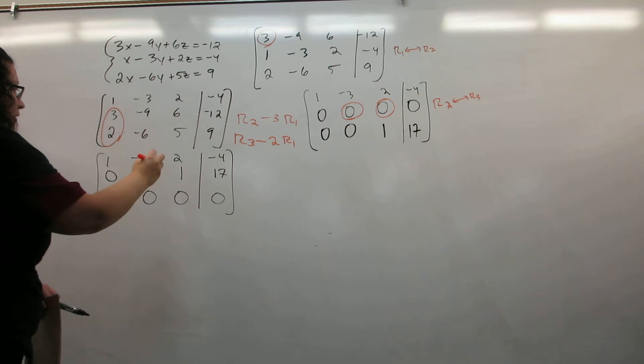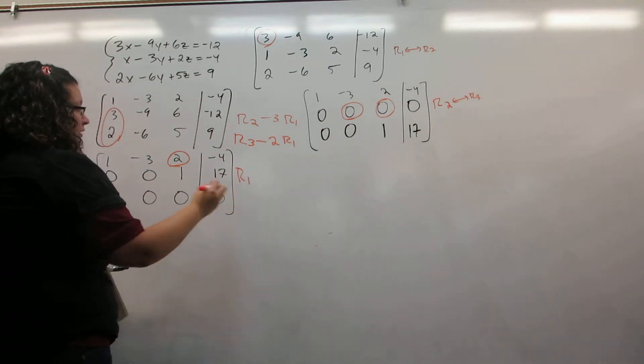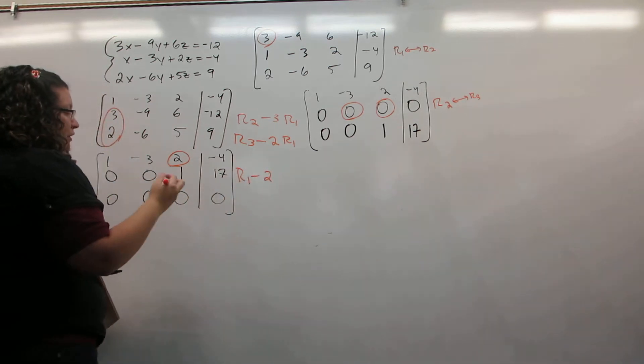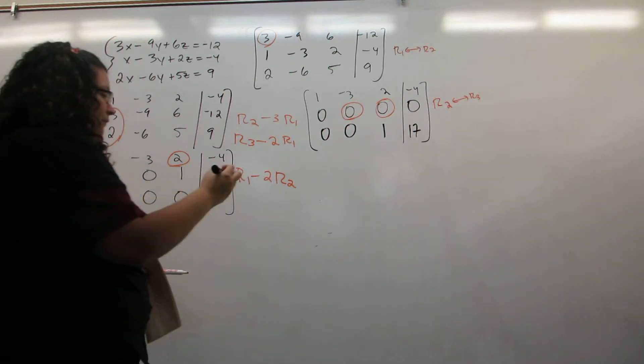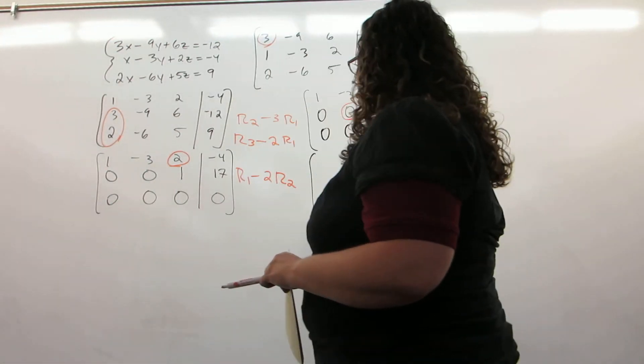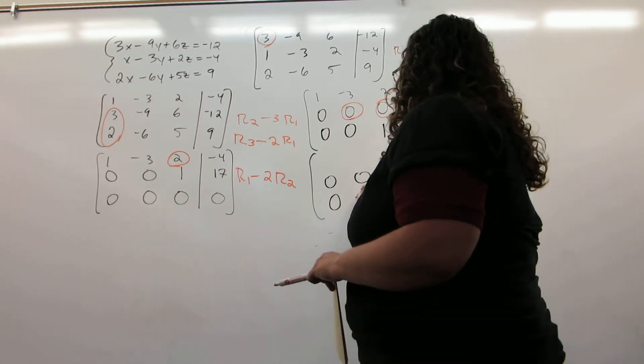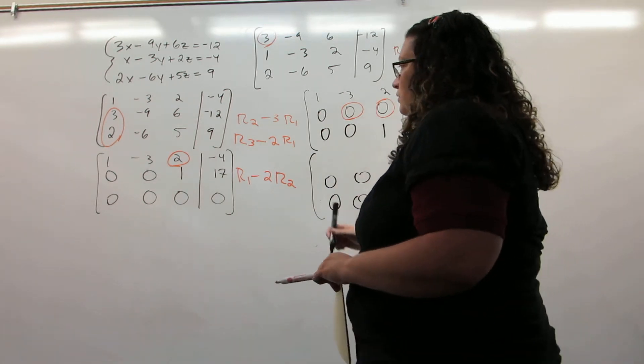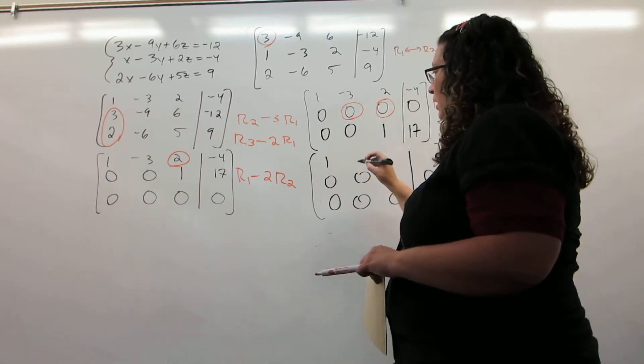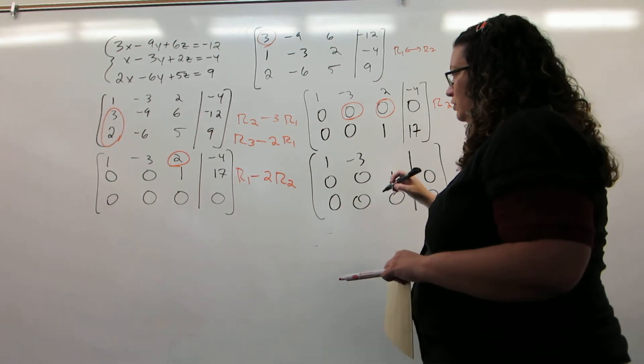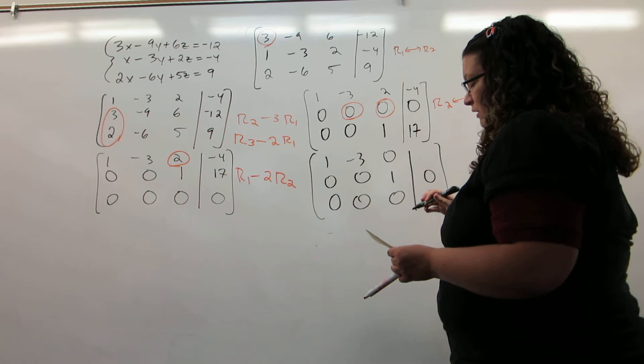Then my last step is to get a 0 above that 1. So it's the row I'm trying to fix, minus the number that's already there, times the row with the 1 in it. So I have 1 minus twice 0, negative 3 minus twice 0, 2 minus twice 1, and negative 4 minus twice 17.